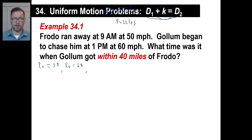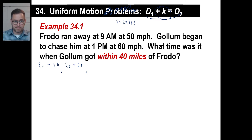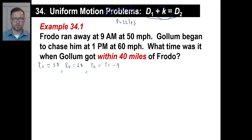Let's do the time relationship first. Frodo runs away at 9 a.m. and Gollum chases him at 1 p.m. So visualize it — Frodo is running for four hours before Gollum even starts. We don't know how long either one ran because the question asks what time it is. What we do know is that Gollum got within 40 miles, so that's when the equation stops. The time of Gollum is the time of Frodo minus four, because 9 a.m. to 1 p.m. is four hours.